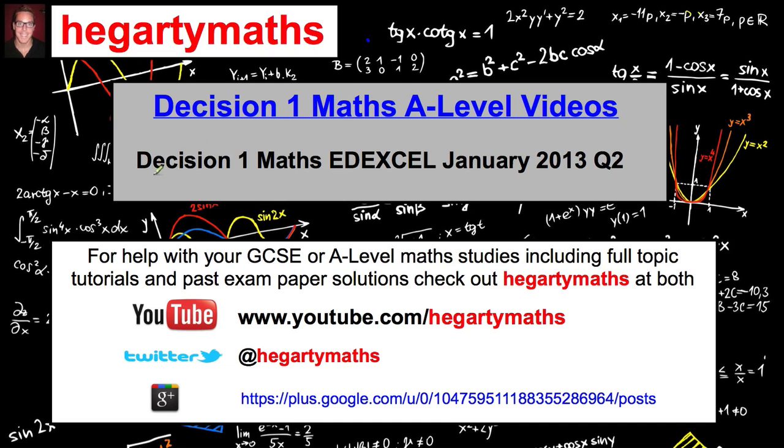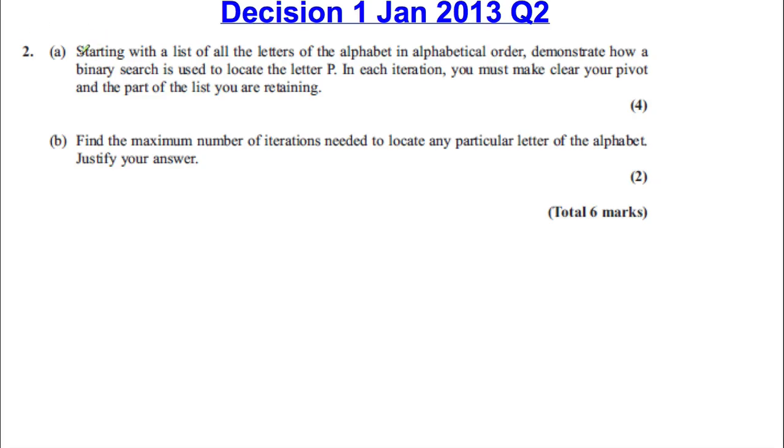In this video, we will do Decision 1, January 2013, Edexcel, question 2. Let's take a look. We are asked, starting with a list of all the letters in alphabetical order, demonstrate how a binary search is used to locate P. In each iteration, you must make clear your pivot and the part of the list you are retaining.